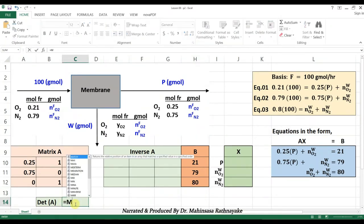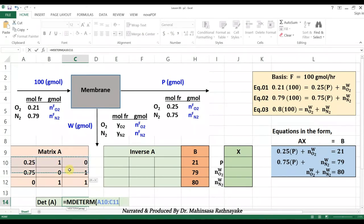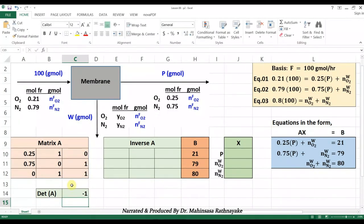For the determinant of a matrix, we use MDETERM function and mark the array of the cells containing matrix A. Then press enter. The determinant of A is not 0, so we can find the inverse of matrix A.